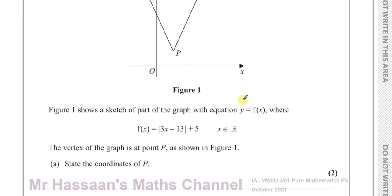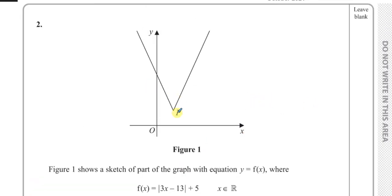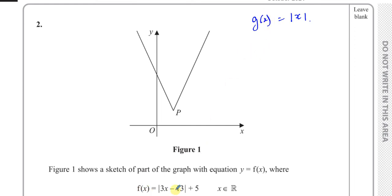There are numerous ways to find the coordinates of point P. One of them is by using a transformation. We could think of the original function, say g of x equals the modulus of x. And we could think of f of x being a transformation of g of x such that x has been replaced by 3x minus 13, so you have g of 3x minus 13, and then you add 5 to the whole thing. So that's the transformation of the modulus function.